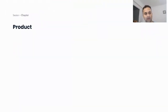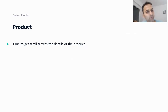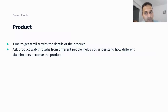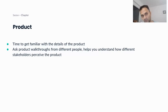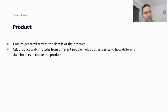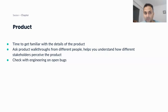The next observation area is the product — it's going to be your bread and butter. Spend a lot of time playing around with the product and ask for product walkthroughs from different people, because it helps you understand how different stakeholders perceive it. Set up product demo calls with fellow product managers, the QA team, and the engineering team. This gives you a different perspective each time and helps you learn different aspects of the product.